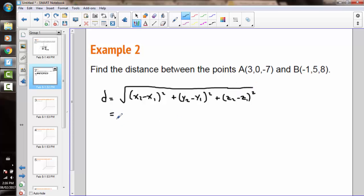Plugging in my values, I get (-1 - 3) squared, plus (5 - 0) squared, plus (8 - (-7)) squared.